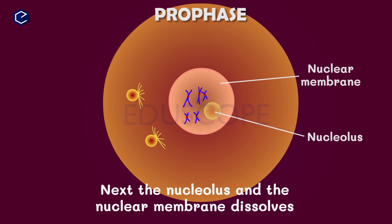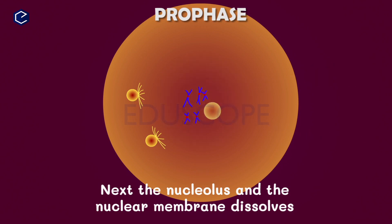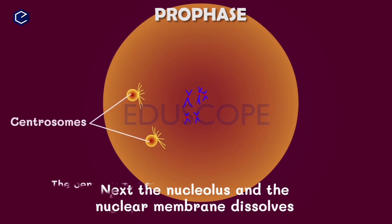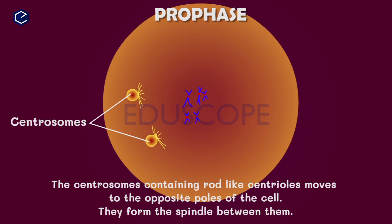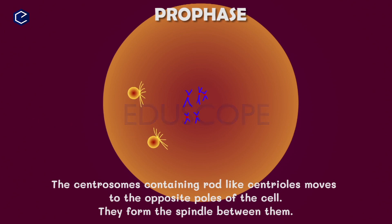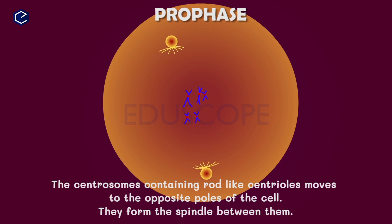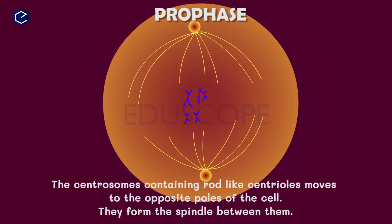During prophase, the nucleolus dissolves and disappears. The centrosomes move to opposite poles and form spindle fibers. When this is complete, prophase is finished.